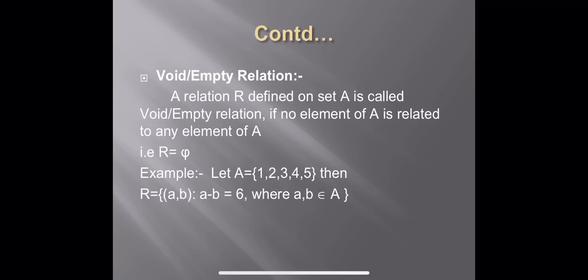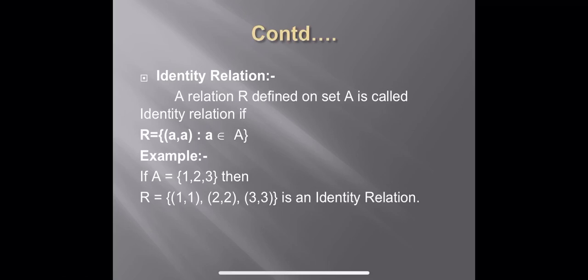The next relation is the identity relation. Definition: a relation R defined on set A is called identity relation if R equals the set of ordered pairs (a, a) such that a belongs to set A. Let us take an example: let set A equal to {1, 2, 3}. Then R equal to {(1,1), (2,2), (3,3)} is an identity relation.